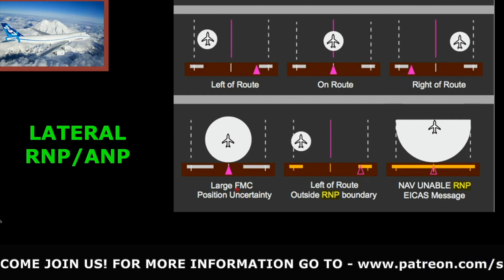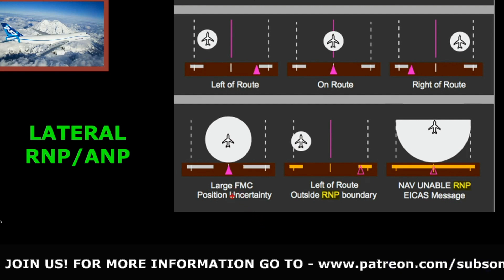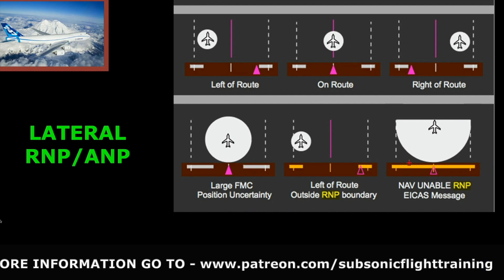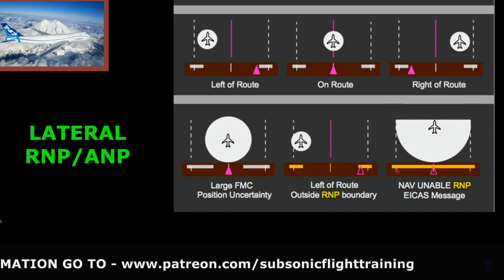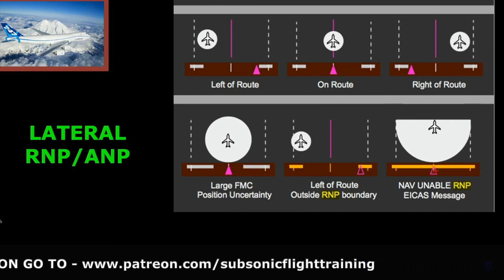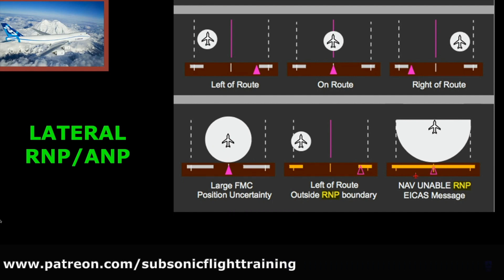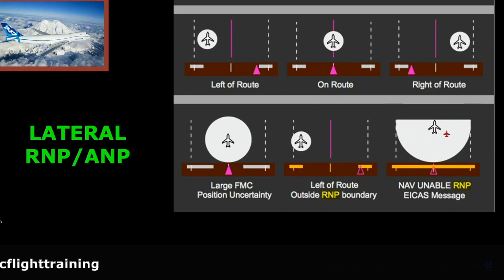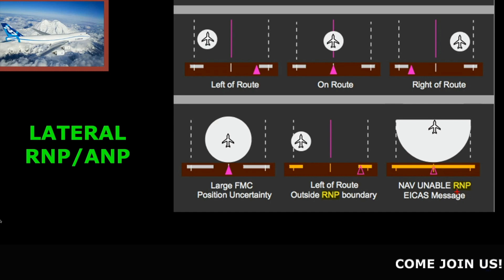If we get a large FMC position uncertainty that continues to grow, eventually the two bars would touch. If they touch, it'll go amber and you'll get a NAV unable RNP message, because now the RNP equals the ANP and you don't have the required accuracy to maintain the RNP limit.